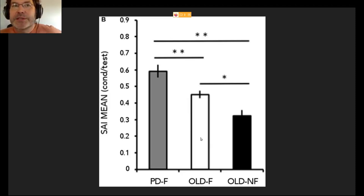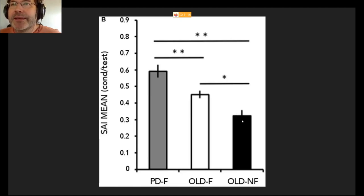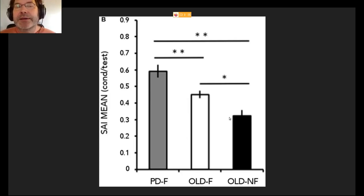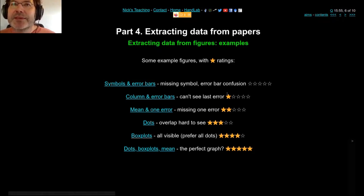Here's a very typical error bar graph produced in Excel. You've got the means and error bars you can extract, but on the black series you can't see the bottom half of the error bar. Error bars should be symmetrical — that's one common error — and they're not always. It's slightly hard to work out that one. They haven't given you all the raw data anyway, so it's not that great. That's one star.